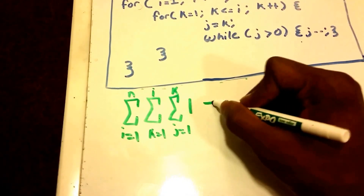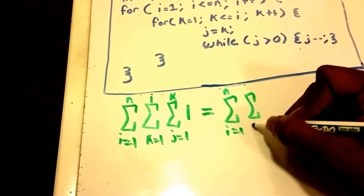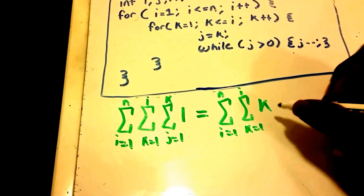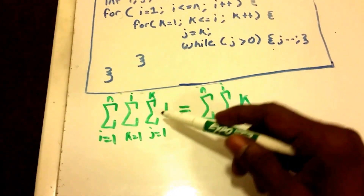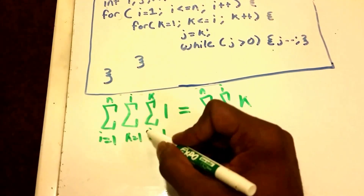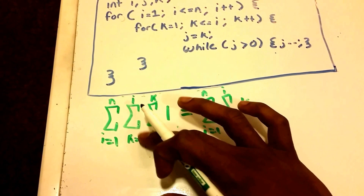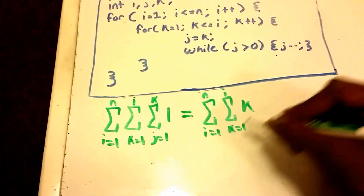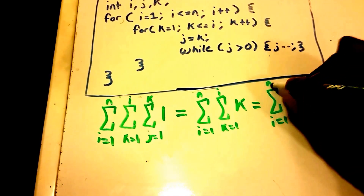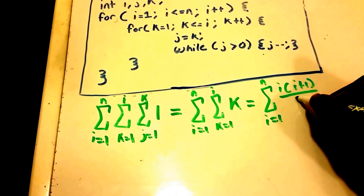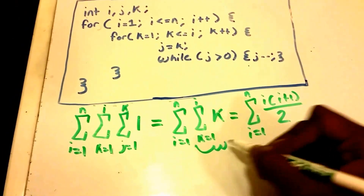Now we're going to solve this. This equals the summation from i equals 1 to n of the summation from k equals 1 to i of k. I'll put a link in the description below to show the summation formulas I'm using. Using that formula, this summation transforms, and so this equals the summation from i equals 1 to n of i times (i+1) divided by 2. Again, the summation formulas are in the description below.